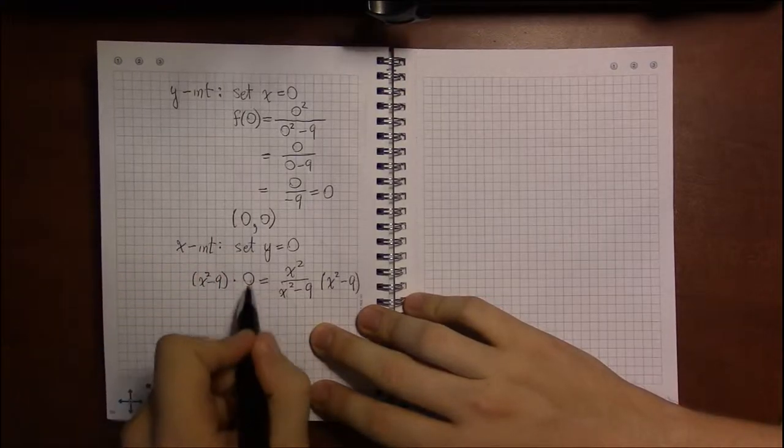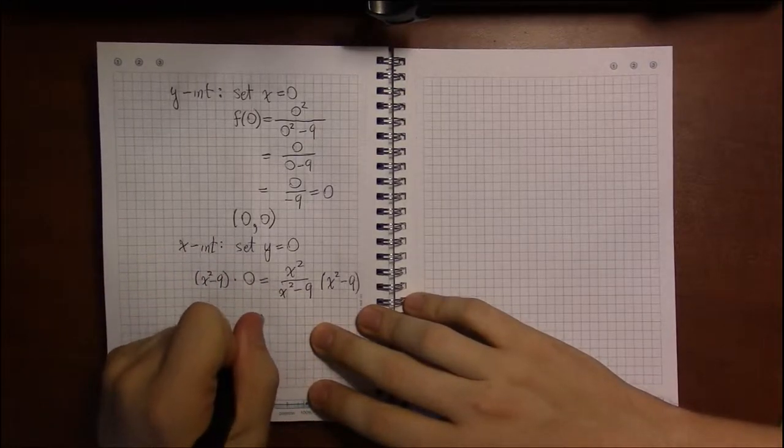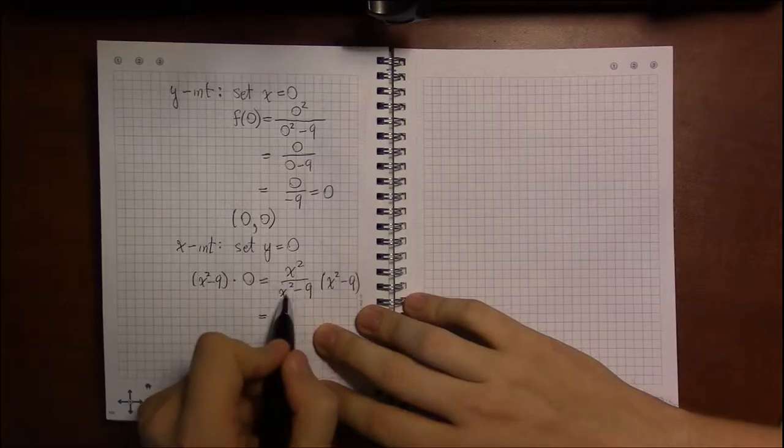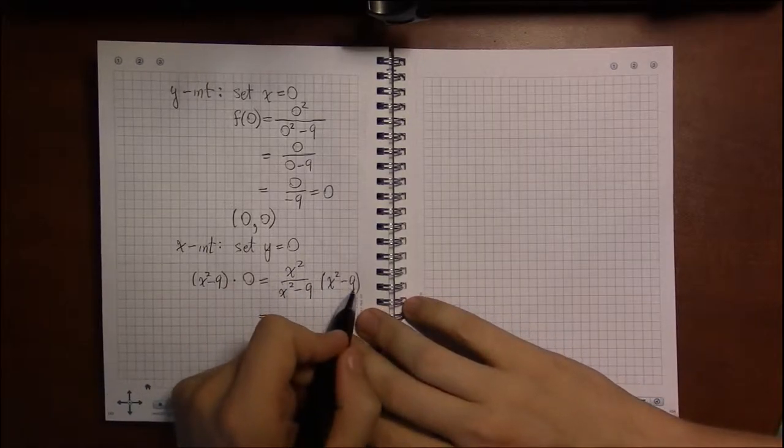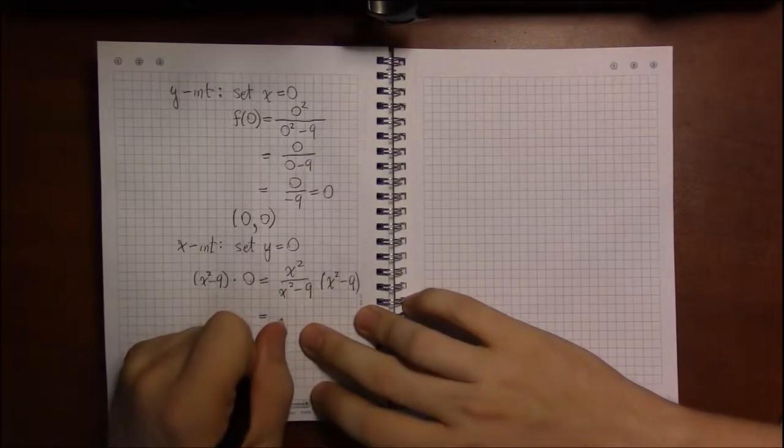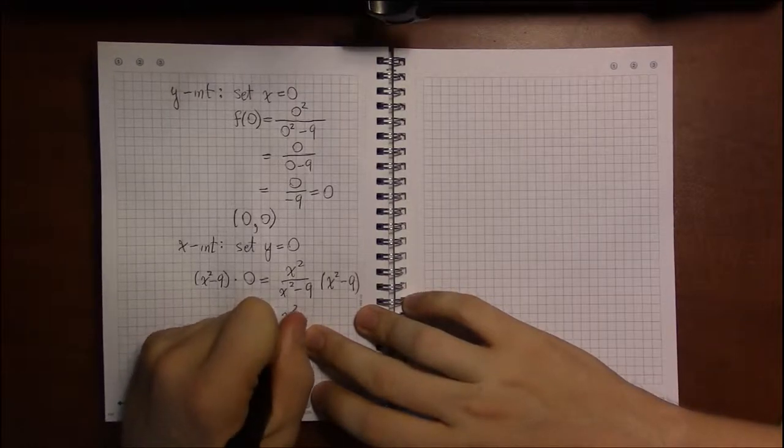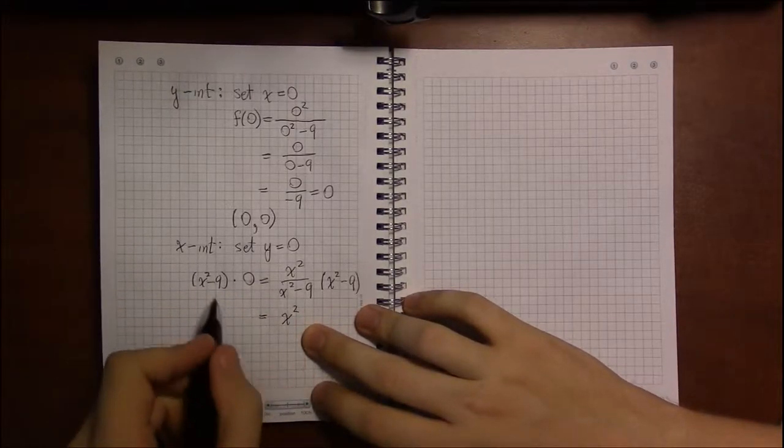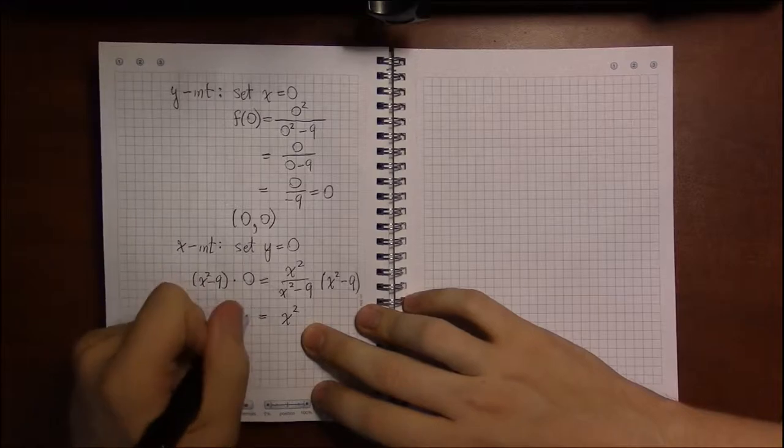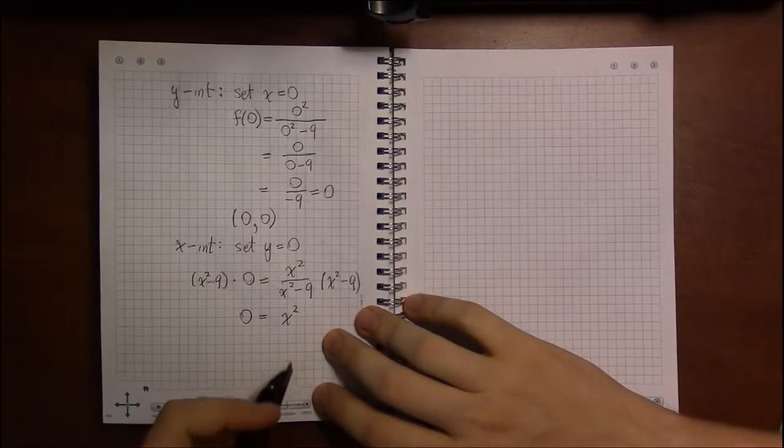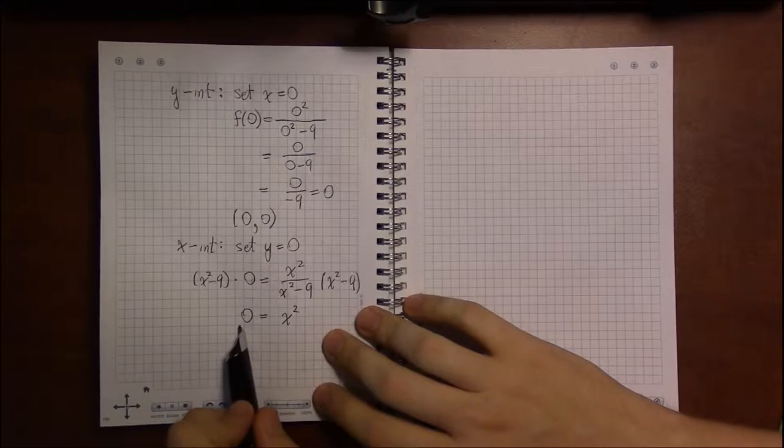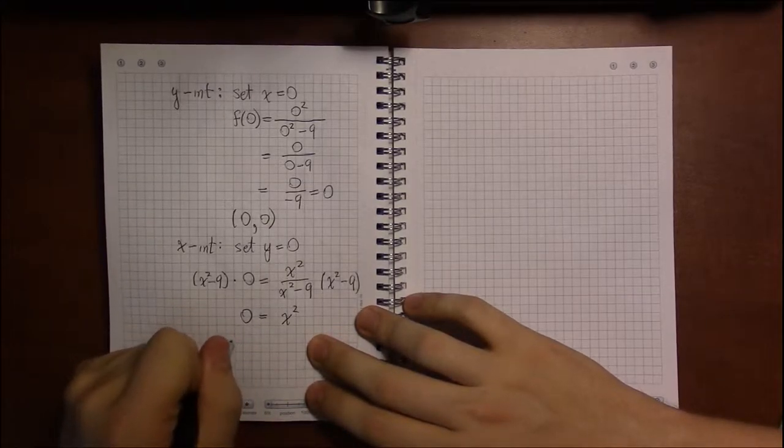This makes the equation nicer to work with. On the right, the denominator will cancel with itself, and we get x squared on the right. On the left, 0 times anything is just 0. So if x squared is 0, taking square roots of both sides,